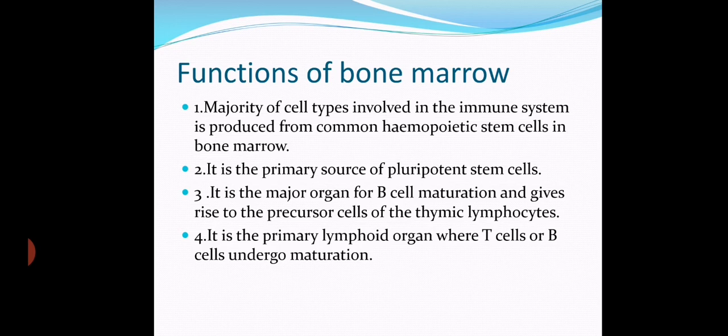Depending upon the potency character of stem cells, we classify them into different types: pluripotent, totipotent, multipotent, oligopotent, and unipotent. Pluripotent stem cells are undifferentiated but can be converted into any cell type. Bone marrow produces such pluripotent stem cells.